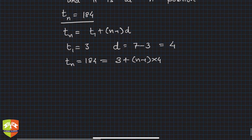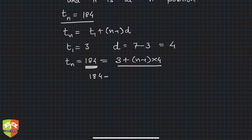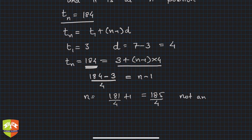If at all 184 is in the sequence, it should obey this rule. So 184 minus 3 divided by 4 is n minus 1, isn't it? That means n is equal to 181 by 4 plus 1, that is 185 by 4, which is not an integer.